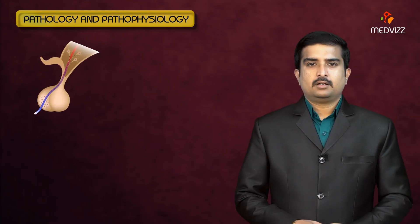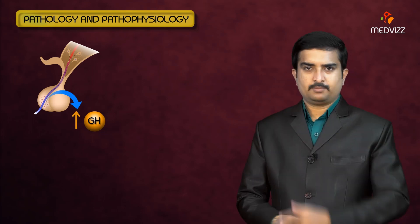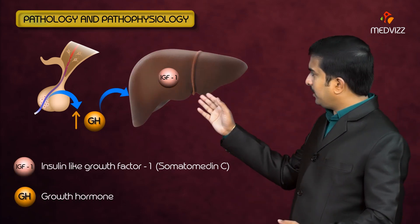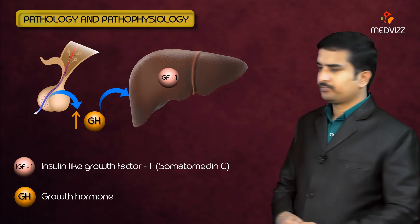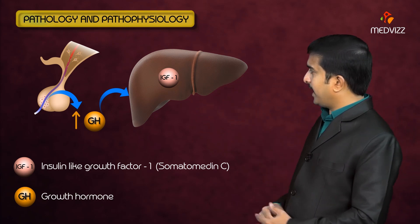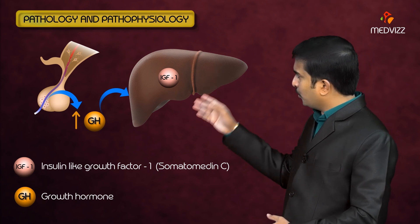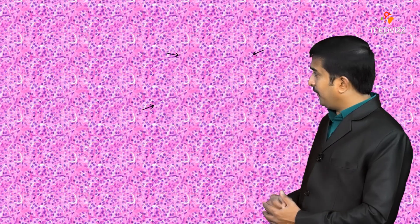Regarding pathology and pathophysiology, increased growth hormone results in increased insulin-like growth factor 1 (IGF-1), also called somatomedin C, which is produced from the liver. In pituitary adenoma, multiple acidophilic cells are visible on histological section, showing secretory granules that contain growth hormone.